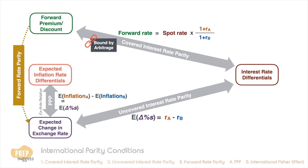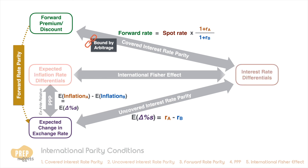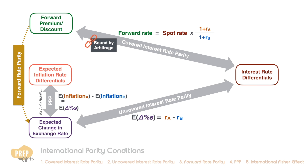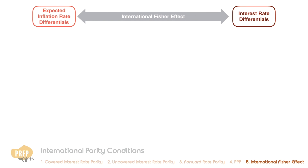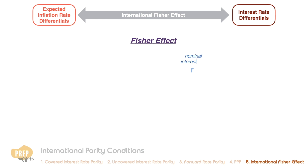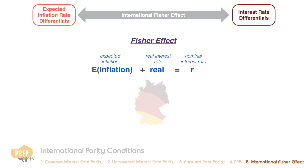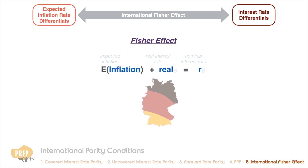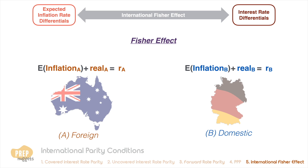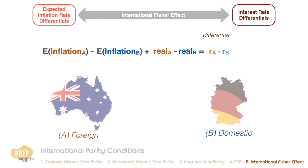So far we've examined the relationship between exchange rates and interest rate differentials, and between exchange rates and inflation differentials. Now we'll bring these concepts together by examining the relationship between inflation rate differentials and interest rate differentials. According to what economists call the Fisher effect, the nominal interest rate in a given country is approximately the sum of the real interest rate and the expected inflation rate. If this holds for both the domestic and foreign country, we would expect the difference between nominal interest rates to equal the difference between real rates minus the difference between expected inflation rates.